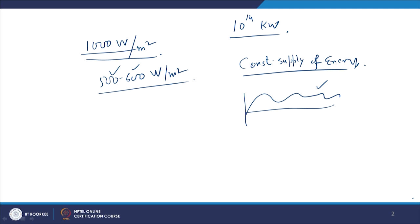This variation has to be taken care of with the help of electronics so that at the output we get a constant supply of solar energy. Further, storage is required when there is variation in thermal energy. For solar PV we can use electronics, but for solar thermal energy some storage is required.